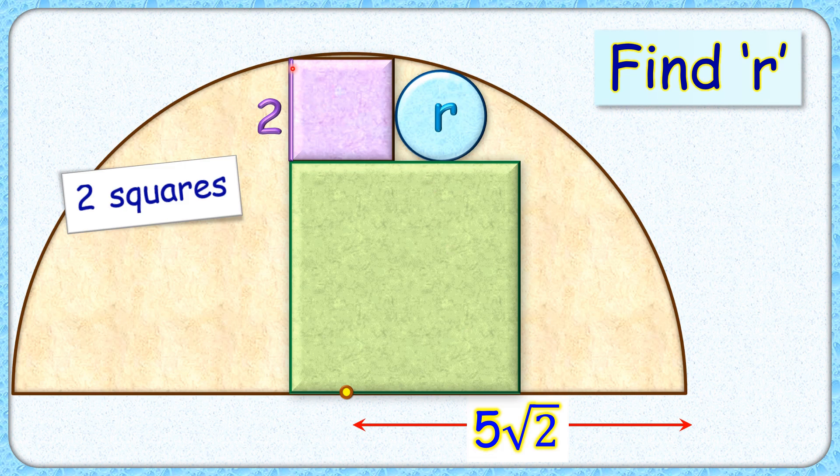The side length of this purple square is 2 cm. The exciting part is with this limited data we have to find the radius of this circle.